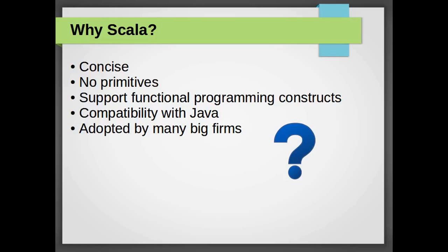So why do we bother about Scala? Scala is concise. Java is a good language but it's verbose. In Scala you can reduce your effort by 10 folds. There are no primitive types in Scala. In Java there are a few primitive types like int, boolean, and char, which are sometimes a bit confusing. But in Scala there are no primitive types and everything is an object.